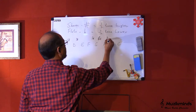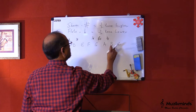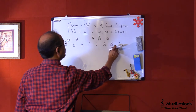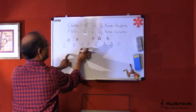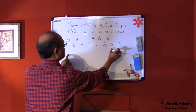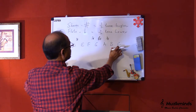Here again there is an A sharp, and between B and C there is no half tone. So basically between E and F there is no half tone, and between B and C there is no half tone.